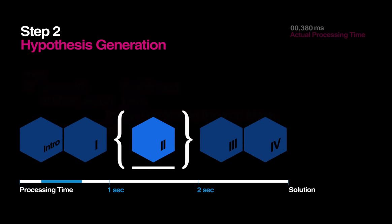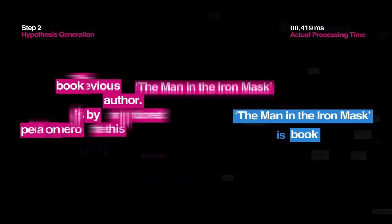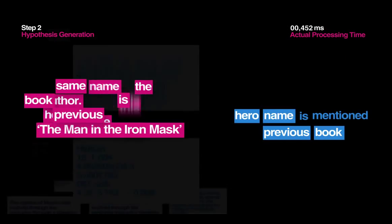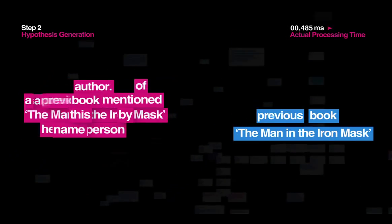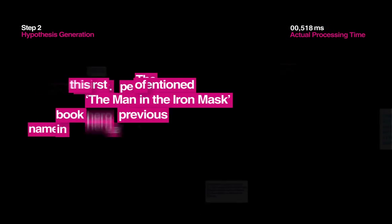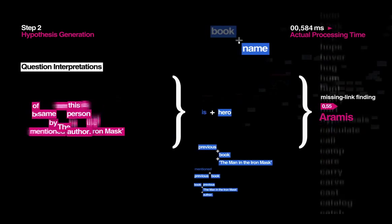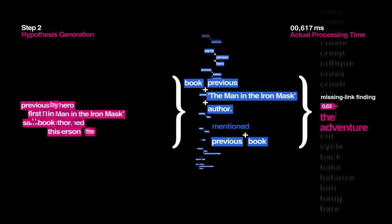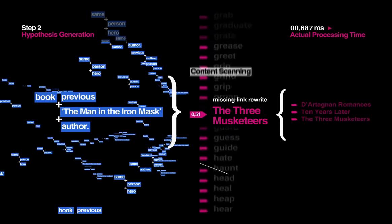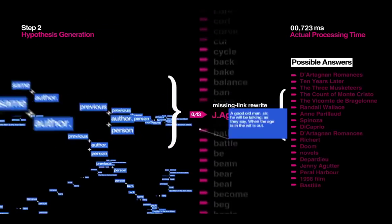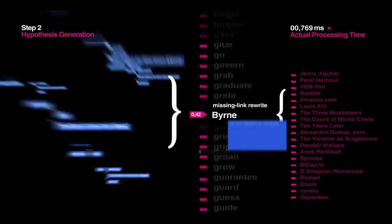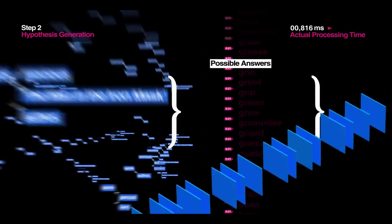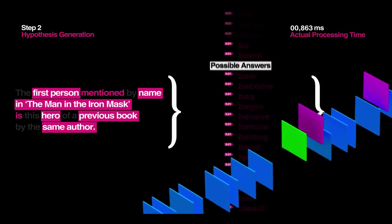Step 2: Hypothesis Generation. For each interpretation of the question, Watson quickly searches through hundreds of millions of documents to come up with thousands of possible answers. At this point, quantity trumps accuracy. It's more important for Watson to generate a large number of possible answers and narrow them down from there, because if the correct answer isn't included during the initial sweep, there is no possible way for Watson to identify and justify the right answer at the end.